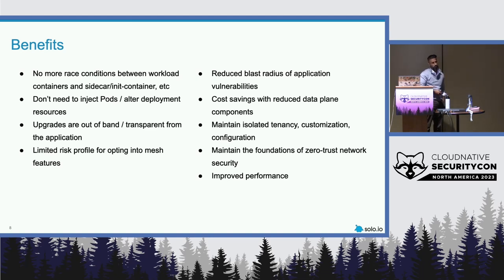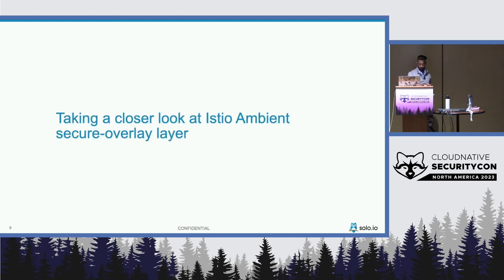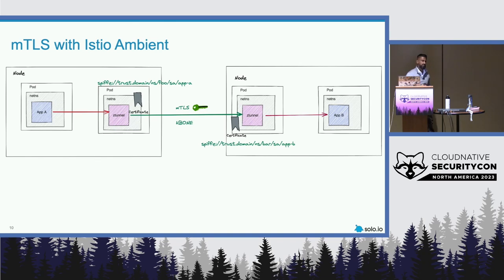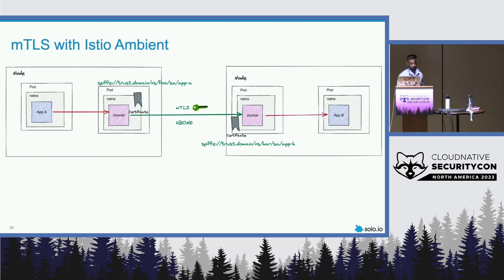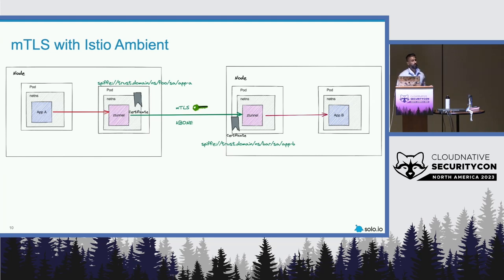All of this works together to contribute to providing that zero-trust network. Let's take a quick look at how we derive identity and what actually goes on with this tunneling. App A is trying to communicate with App B. Because these two workloads are tagged for ambient-based traffic, we already know to put that traffic into the Z-tunnel and encrypt it with MTLS. But what is this tunnel? Where did it come from?